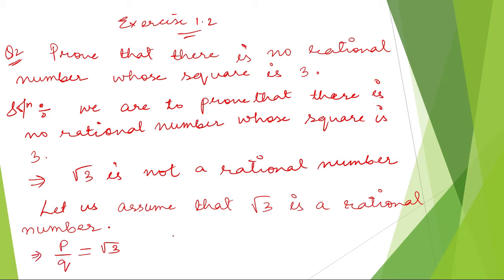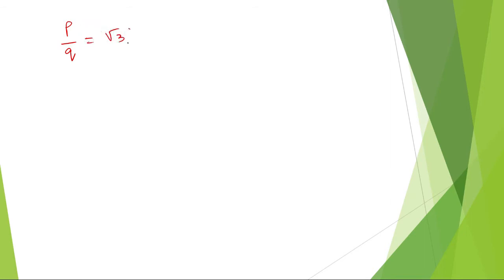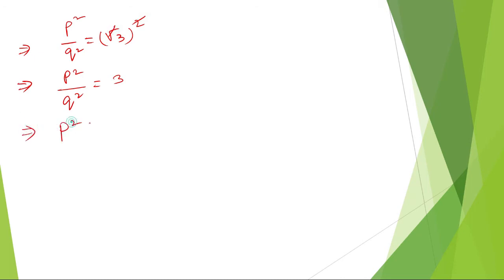We can write root 3 is equal to p by q, where q does not equal 0. Now squaring both sides, we get p squared by q squared is equal to 3. Rearranging, p squared is equal to 3 q squared.